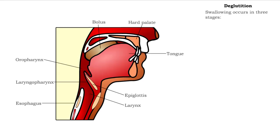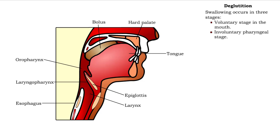Swallowing, or deglutition, occurs in three stages: the voluntary stage in the mouth, the involuntary pharyngeal stage, and the involuntary esophageal stage.